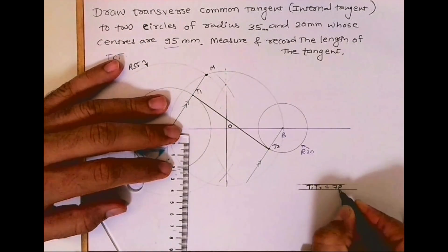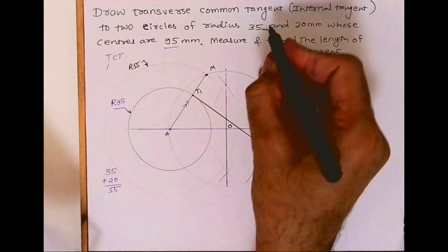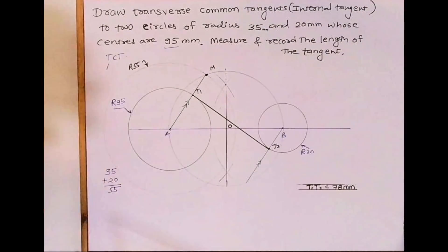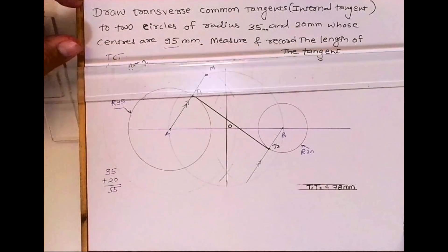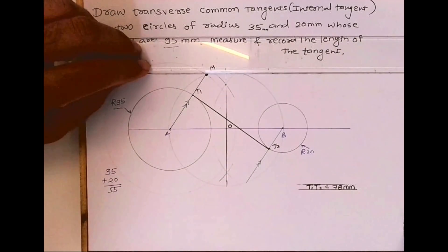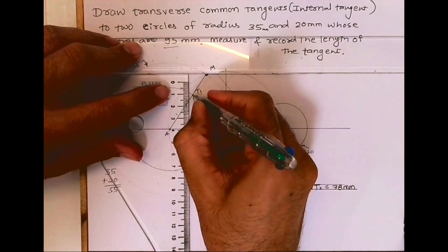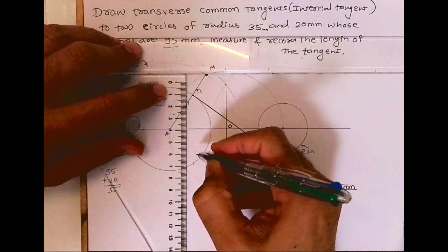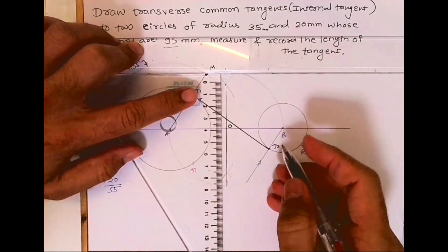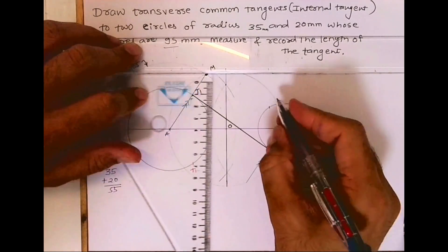If they ask you to draw two tangents, draw vertical lines from T1 and T2, and draw another tangent like this. Mark the point down as T1 and mark this point up as T2.